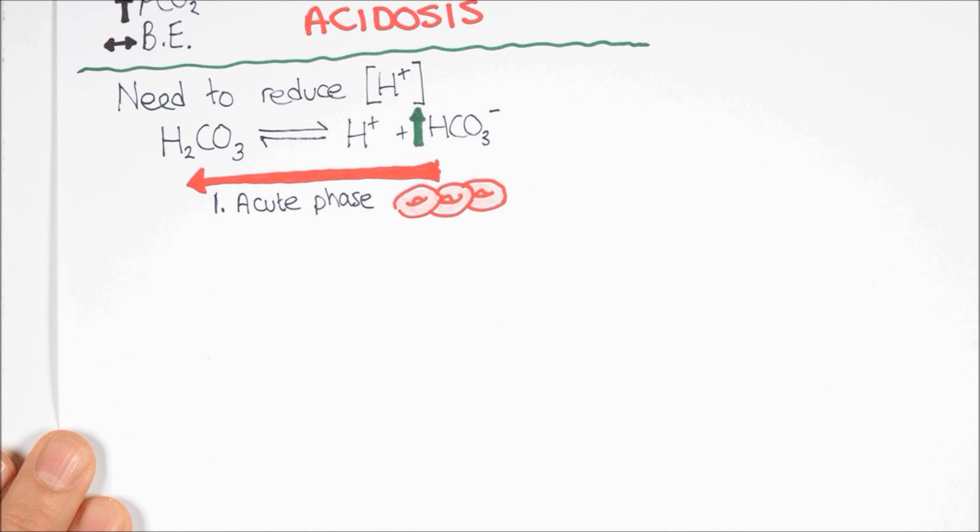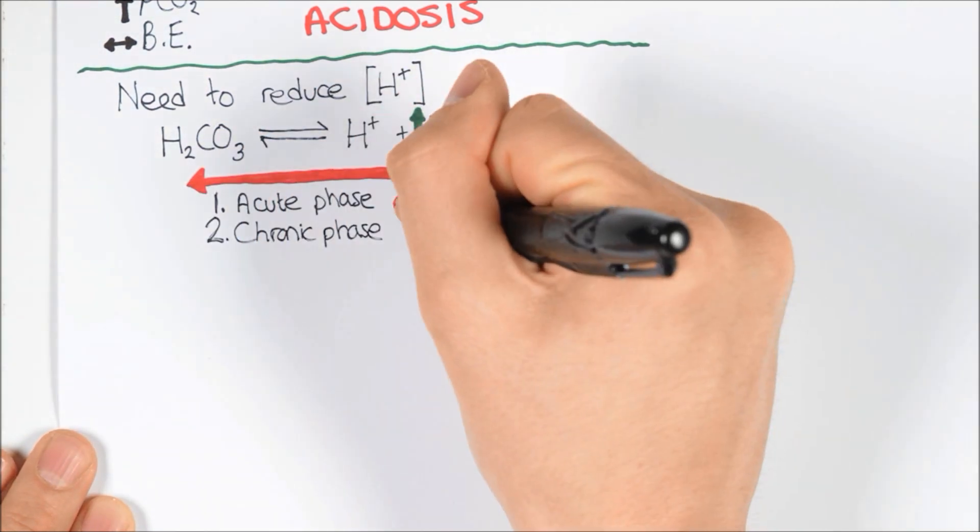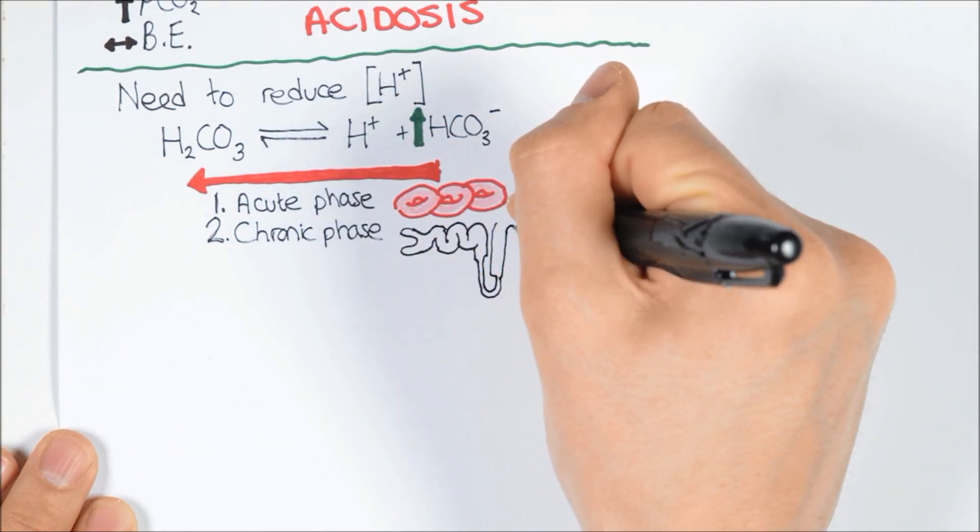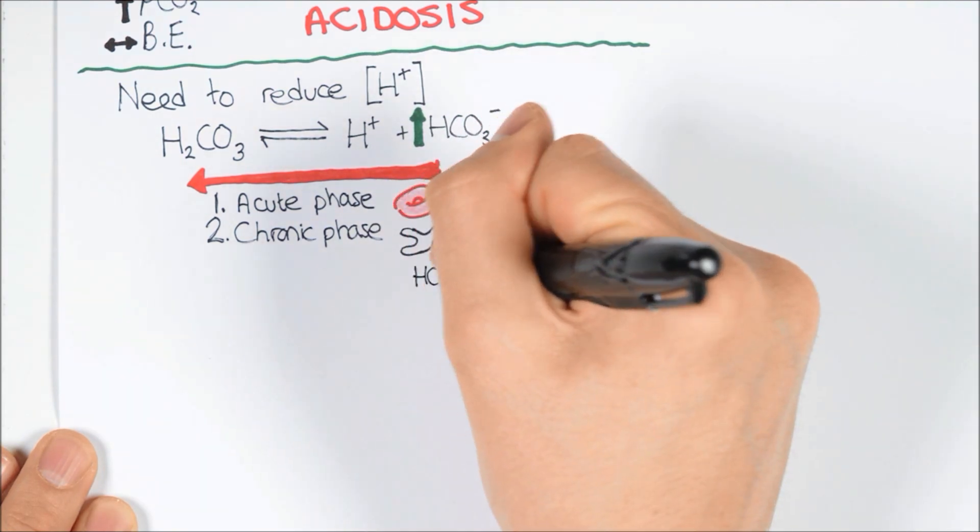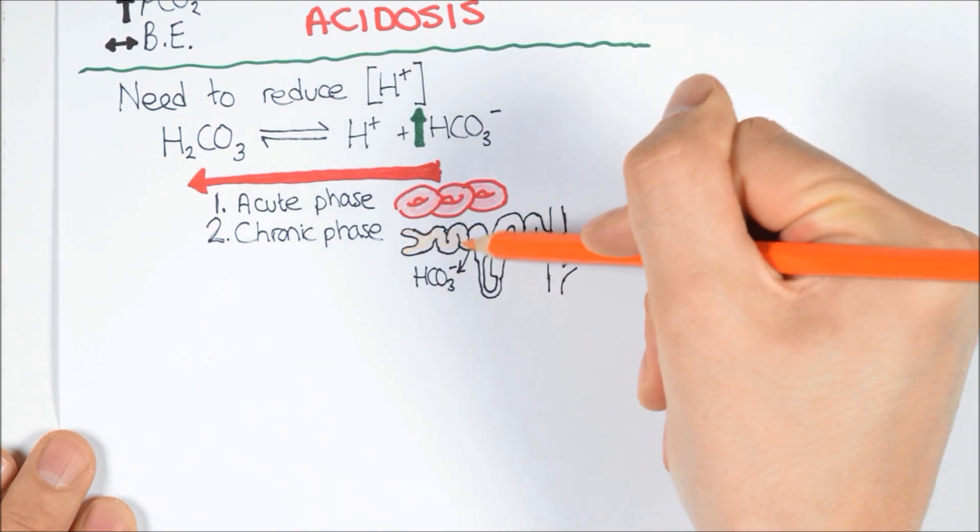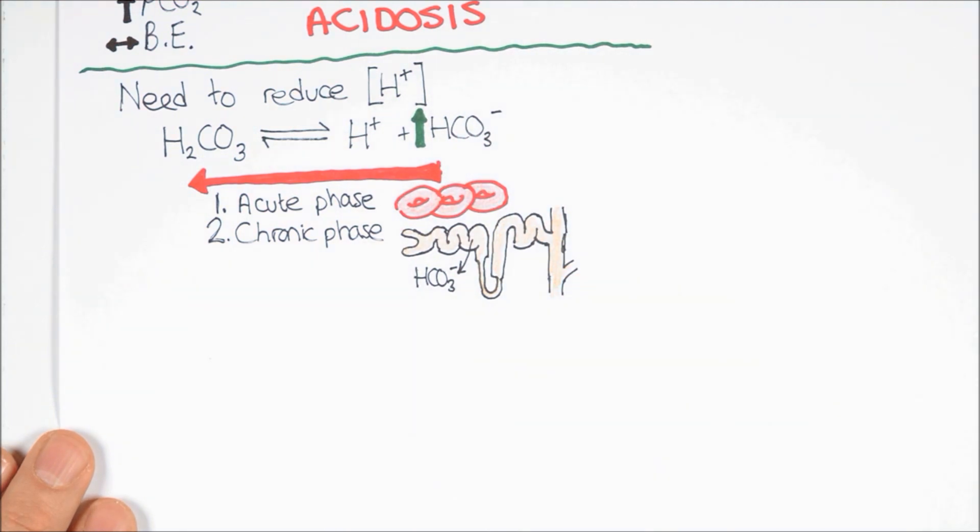Bicarbonate in turn moves out of the cell via the AE1 transporter. The increased plasma bicarbonate concentration pushes the carbonic acid equilibrium backwards, promoting the binding of protons to form the conjugate carbonic acid, thereby increasing pH. Secondly, the chronic response is to increase the amount of bicarbonate reabsorbed in the kidneys, providing a longer-term mechanism for the stabilization of pH.